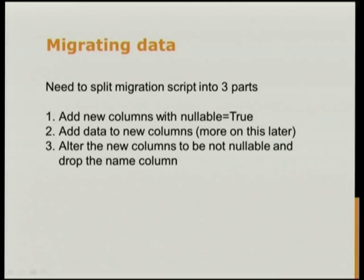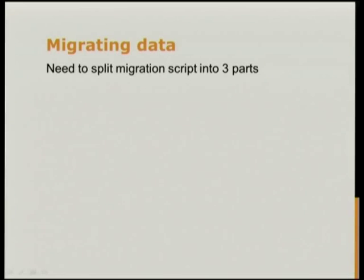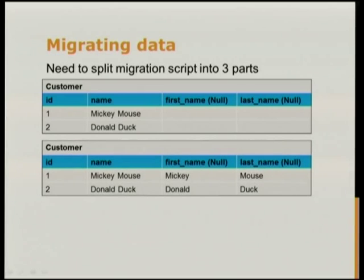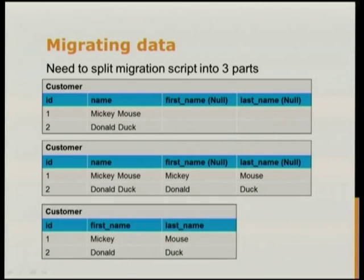We need to split our migration into three steps. First, we add the new columns, but they need to be nullable because they're going to start off having nulls in them. Then we add the data to the new columns, moving it out of the name column. Then we alter the columns to be not nullable and drop the name column. First, we add nullable columns. Then we copy the data out of the name column into the first name and last name columns. And then we delete the name column and change the new columns to be not nullable.